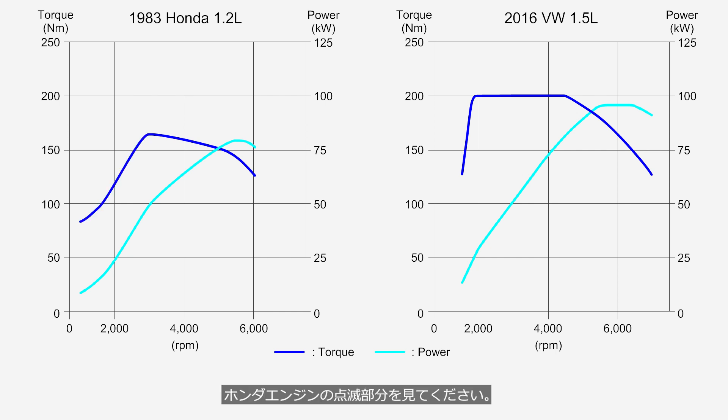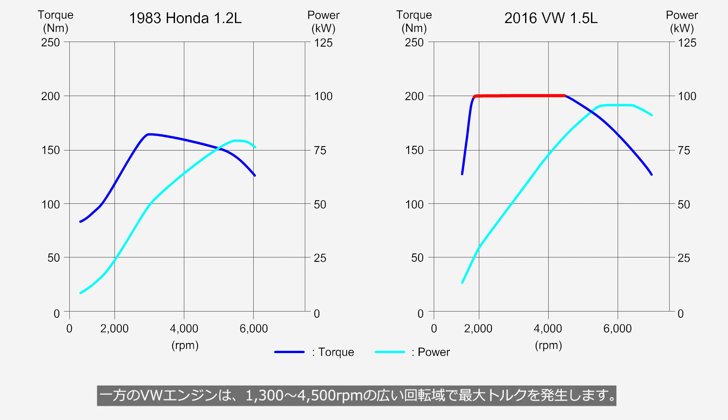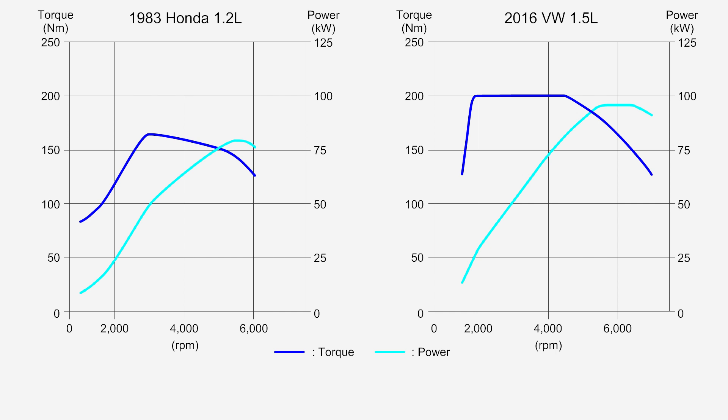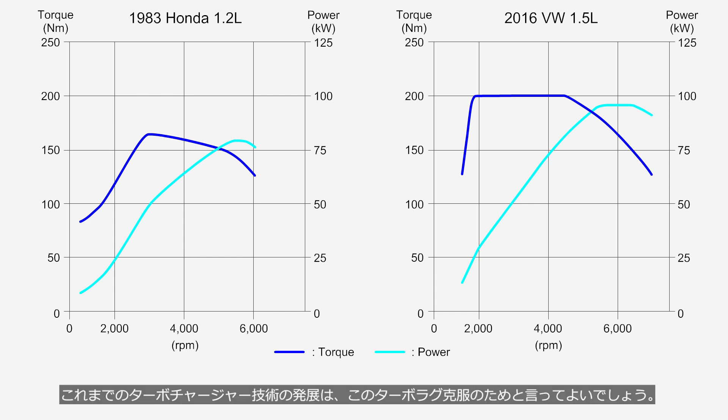Take a look at the highlighted section of the Honda engine. The torque is low in the low engine speed range, and maximum torque is generated at 3,000 RPM. On the other hand, the Volkswagen engine generates maximum torque over a wide range, from 1,300 to 4,500 RPM. You can clearly see that the old Honda engine has turbo lag. The development of turbocharger technology has been aimed at overcoming this turbo lag.